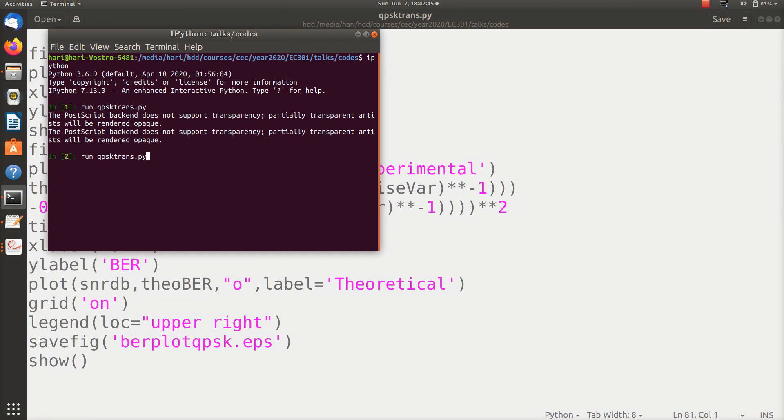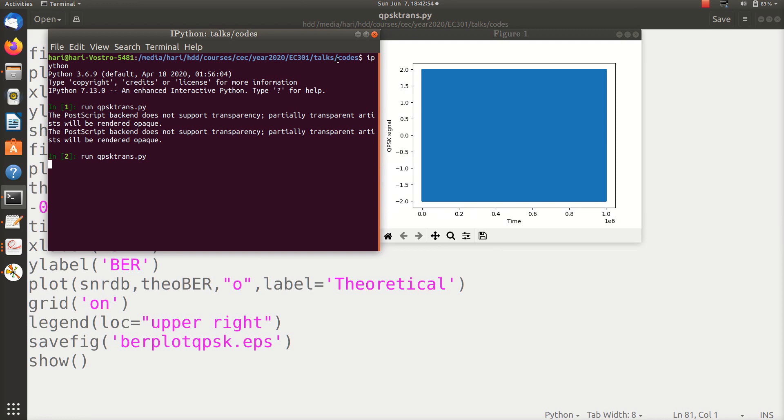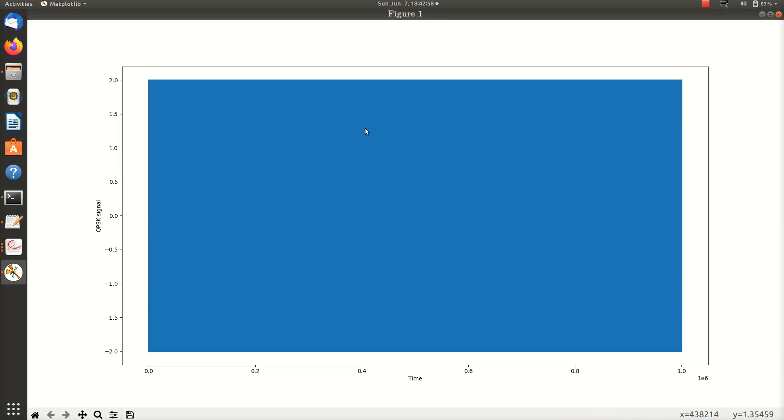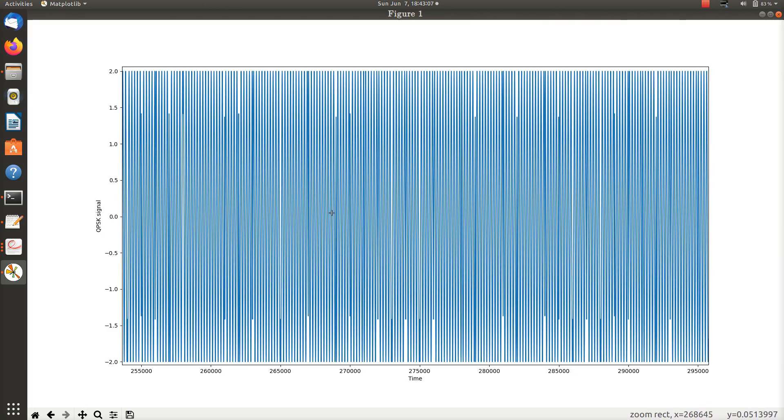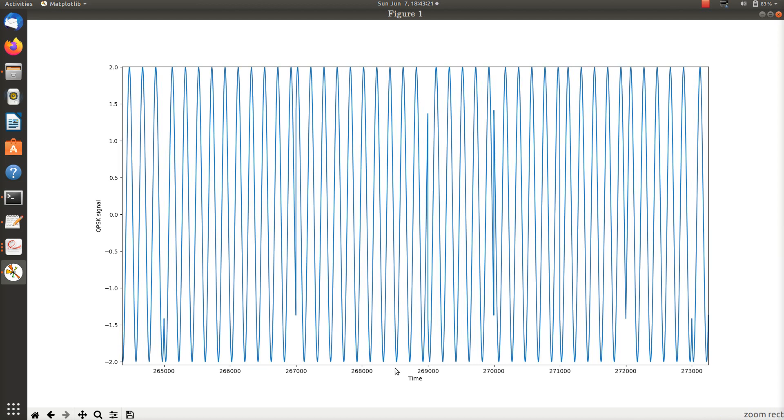Let me run this code. If I run this code, the first figure shows the QPSK signal. Now let us zoom this and see how it looks like. If I zoom for a very small area, you can see that here there is a phase change. All the phase changes happen - this phase change is happening at 5π/4, and this is happening at another phase. All these phase changes do happen at all multiples of π/4.